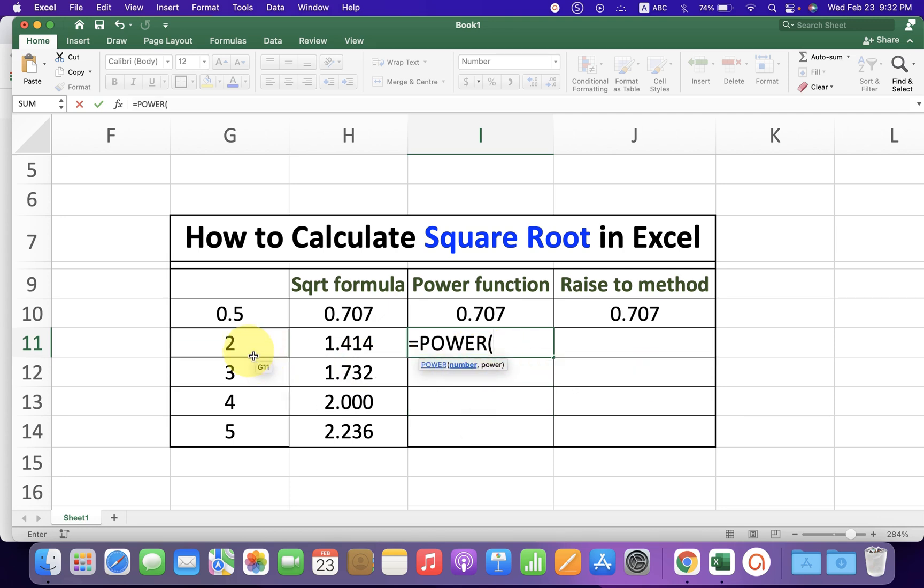Now select the number, type comma, one divided by two, close the bracket, and press Enter.